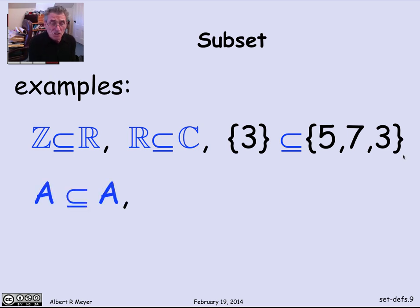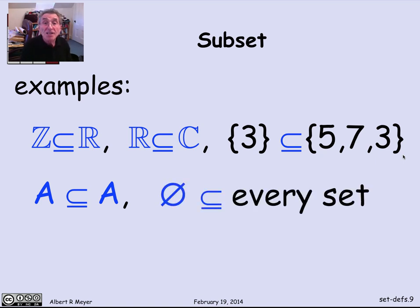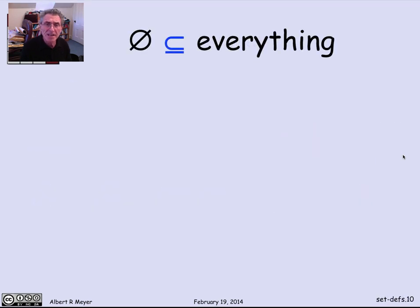A consequence of this general definition is that every set is a subset of itself. Because everything in A is in A, that's not really very interesting. Another important general observation is that the empty set is a subset of everything. The empty set is a subset of every set. Let's look at why that is in more detail.